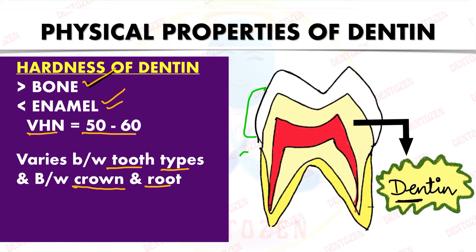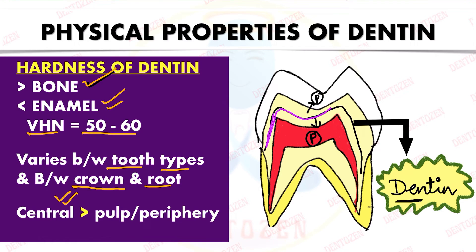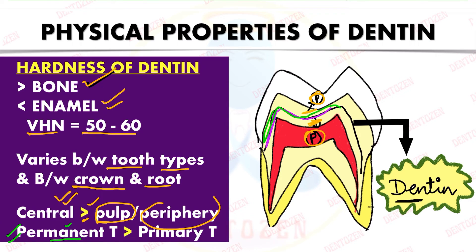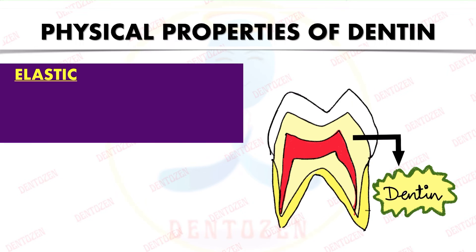If we divide dentine into three zones — central, near the pulp, and near the periphery — the central part has the greatest hardness compared to the zone near the pulp or the zone near the periphery. In permanent teeth, the hardness of dentine is greater compared to primary teeth.